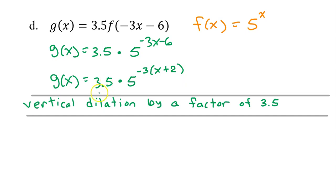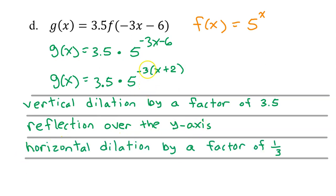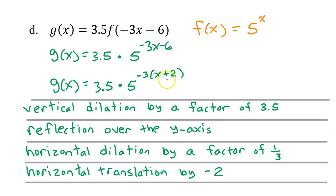The 3.5 in the front gives a vertical dilation by a factor of 3.5. The negative sign on the inside gives a reflection over the y-axis. A 3 multiplying on the inside means a horizontal dilation by a factor of 1 third — don't forget to take the reciprocal for any horizontal dilation. And finally, the plus 2 on the inside is a horizontal translation by negative 2, the opposite of what it appears.